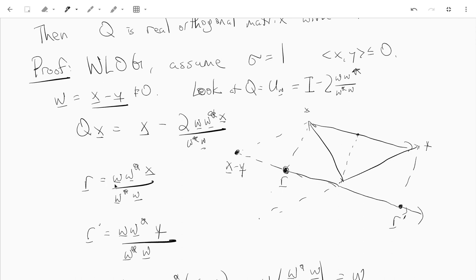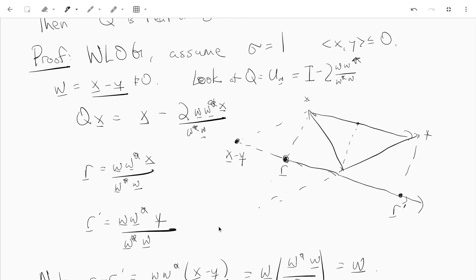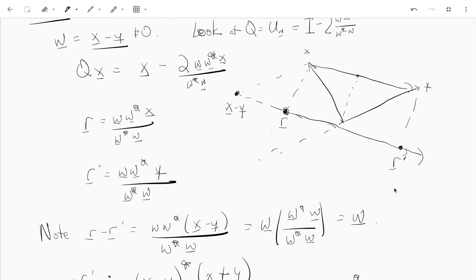So just by definition, r is just ww star x over w star w, and similarly for y. And what we want to show is that our goal is to basically verify that this picture I've drawn for you is like accurate. And what does this picture say? Well, it says that r prime is negative r, and 2r is w. And if 2r is w, then x minus 2r is going to be y, and that x minus 2r is going to be Qx. So that's what we need to verify.